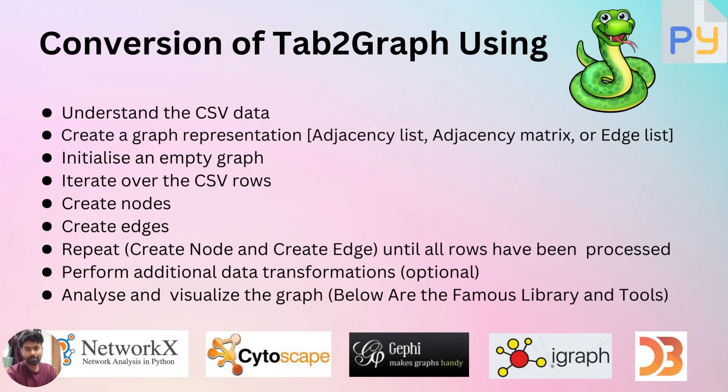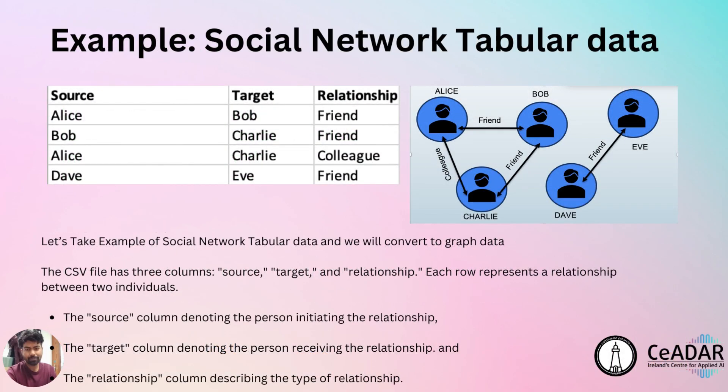Finally, we have the option to analyze and visualize the graph. These steps allow us to gain insights into the relationships and connectivity within the data. We can use graph analysis libraries like NetworkX or visualization tools like Gephi, and other tools like Cytoscape, iGraph, and D3.js, to perform various analyses or create visual representations of the graph. By converting CSV data to a graph representation, we can leverage graph structures, algorithms, and visualizations to uncover patterns, identify clusters, detect anomalies, and gain deeper understanding of the data.